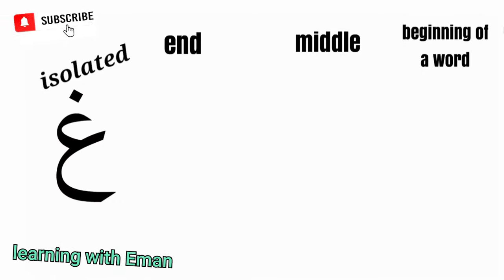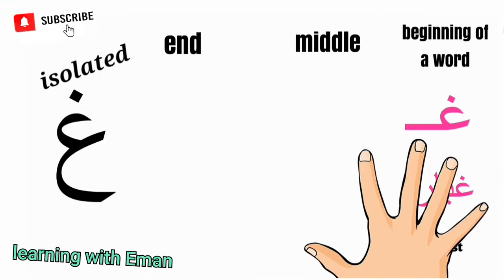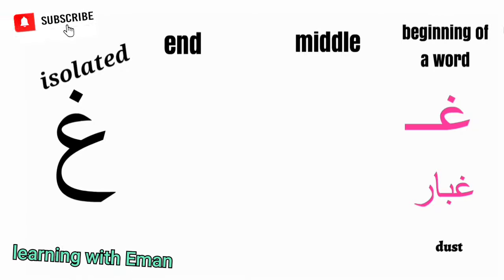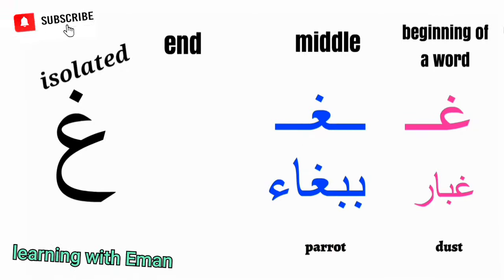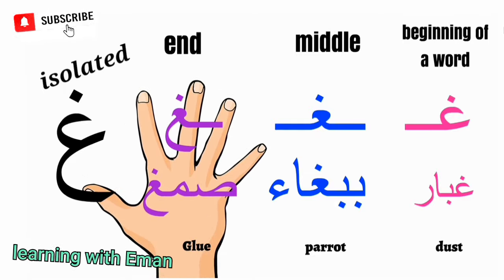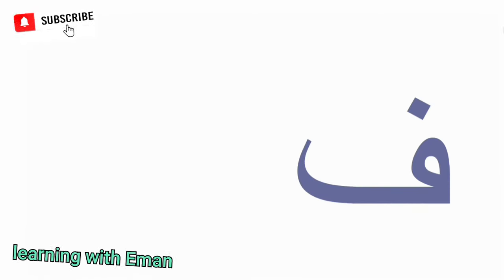Ghain sounds like the combination GH, like the noise when you gargle. At the beginning of a word, like 'Ghobar', meaning dust. At the middle of a word, like 'Babagha', meaning parrot. At the end of a word, like 'Soma', meaning glue.